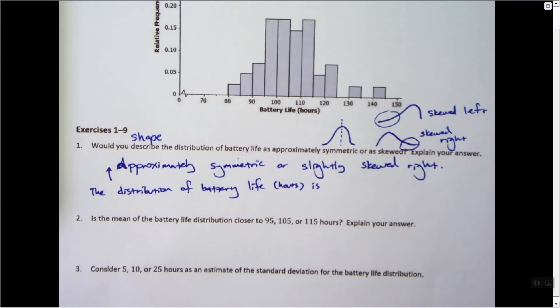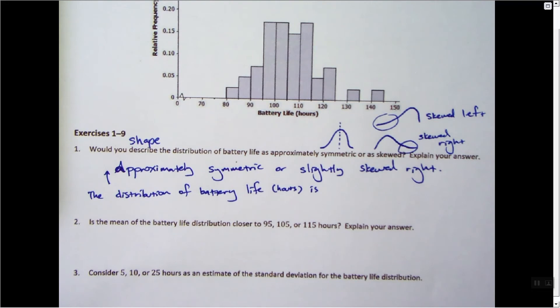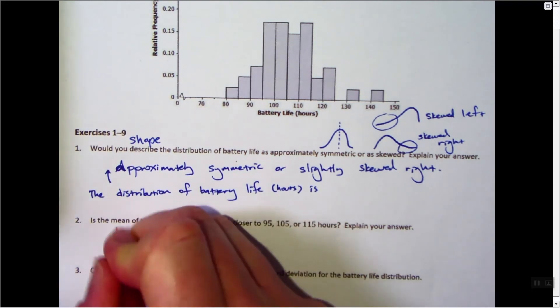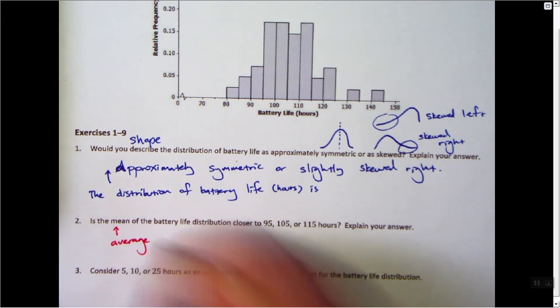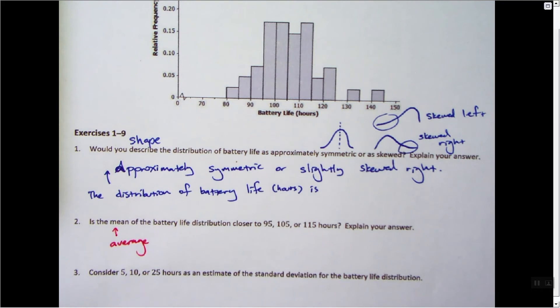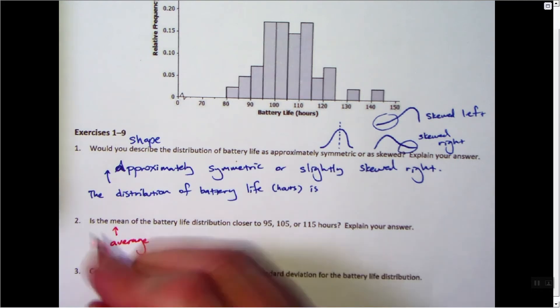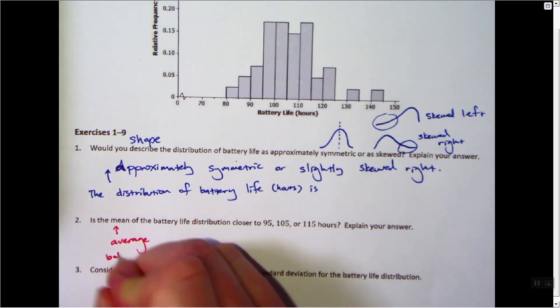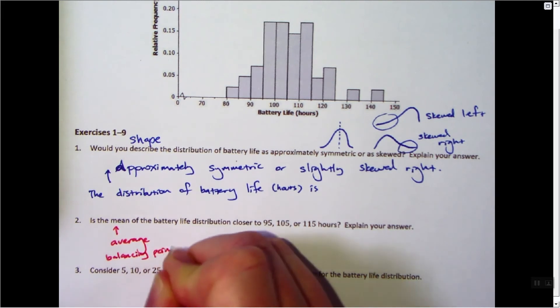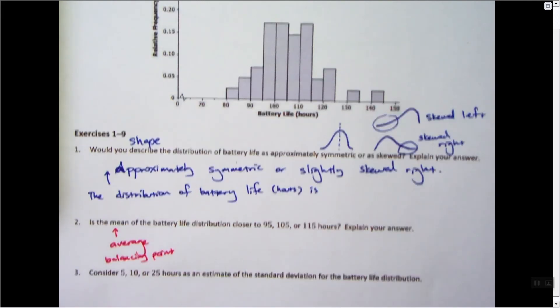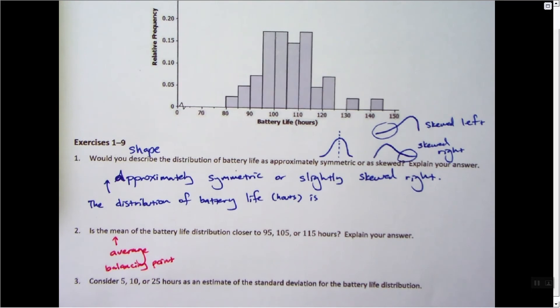The mean—what the mean means is the arithmetic mean, or the average. The other way to look at this on a graph is it's the balancing point. So where can I kind of put this on a balance, or what's the arithmetic average?